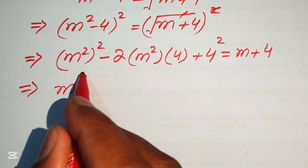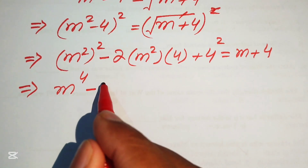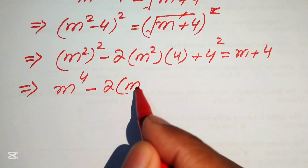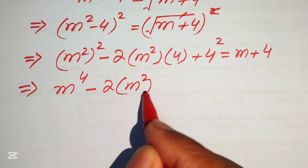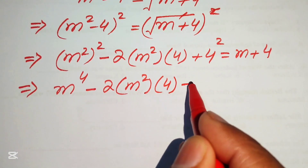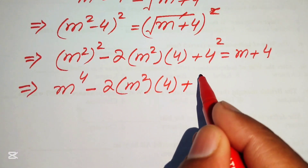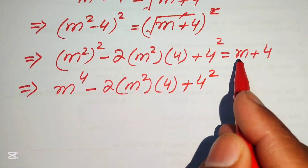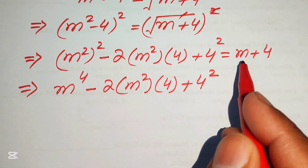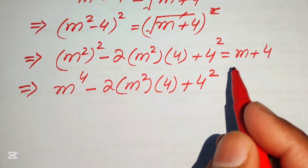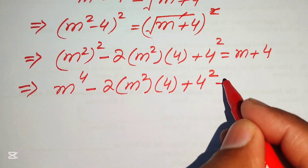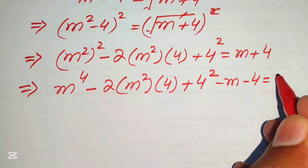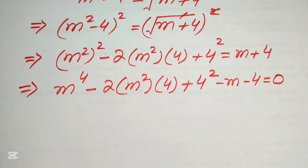After expanding, we obtain m⁴ minus 2 times m² times 4 plus 4² on the left. We move the remaining terms to the left-hand side, giving us m⁴ - 8m² + 16 - m - 4 = 0.